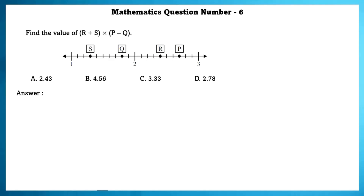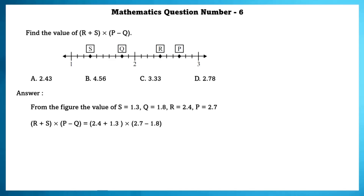Mathematics question number 6. Find the value of R plus S into P minus Q. From the figure, S equals 1.3, Q equals 1.8, R equals 2.4, P equals 2.7. So R plus S into P minus Q equals 2.4 plus 1.3 into 2.7 minus 1.8, which simplifies to 3.33.